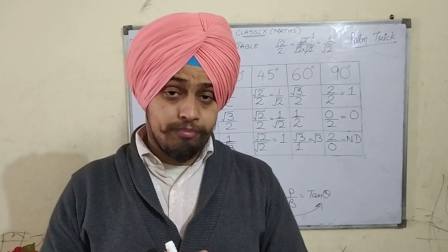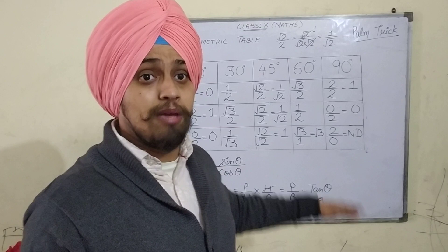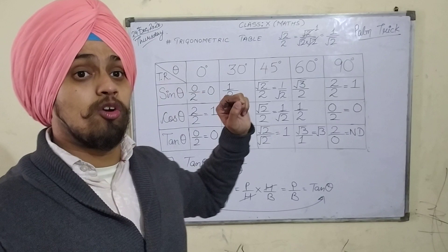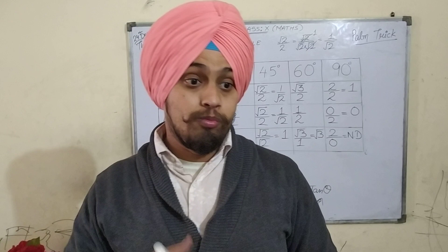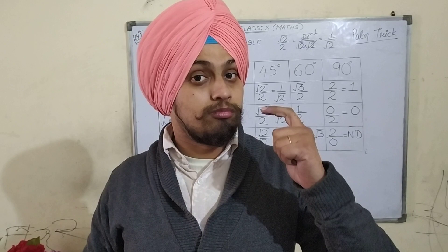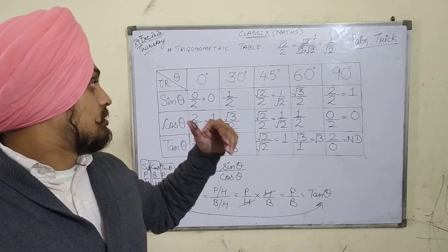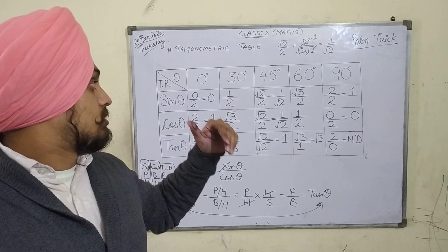So in an exam you don't need to draw the table and waste your time. You can calculate the value of any trigonometric ratio at any standard angle within a few seconds. But for that you need to practice this method using various questions. I recommend that while preparing for your exam, just solve 10 to 12 questions based on the values of trigonometric ratios at standard angles, solve them using this palm trick, and you are ready for the exam. Thank you very much.